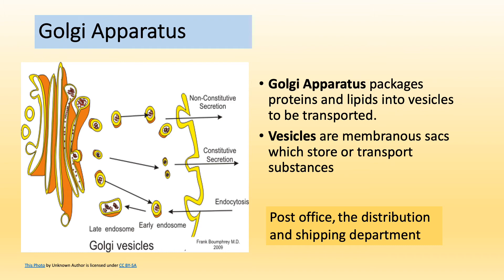Another membrane-bound organelle is the Golgi apparatus. It looks like flattened sacs stacked on top of each other — like pancakes. The Golgi apparatus packages the proteins and lipids coming from the smooth and rough endoplasmic reticulum into small vesicles to be transported. Vesicles are membranous sacs which store or transport substances. The Golgi apparatus acts like a post office distribution and shipping department. It also makes a special type of vesicle called a lysosome.